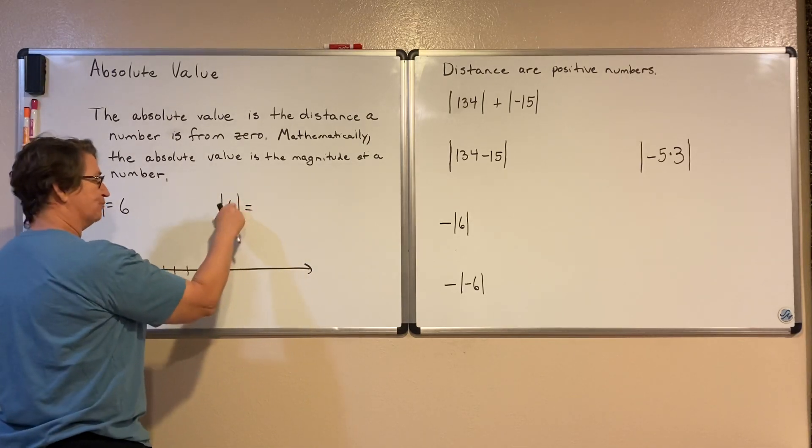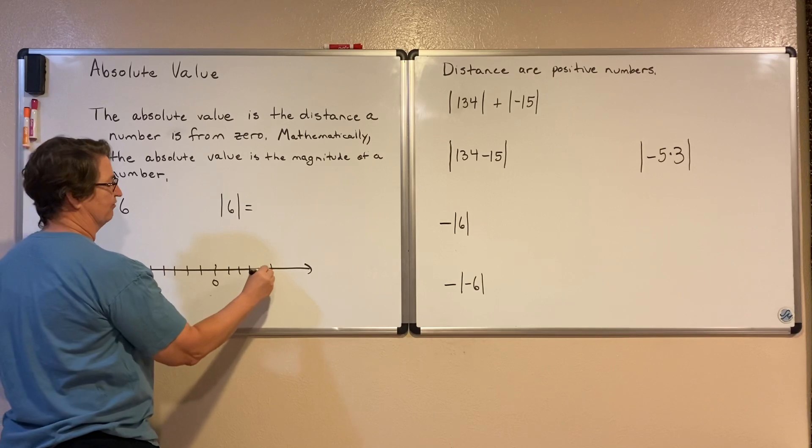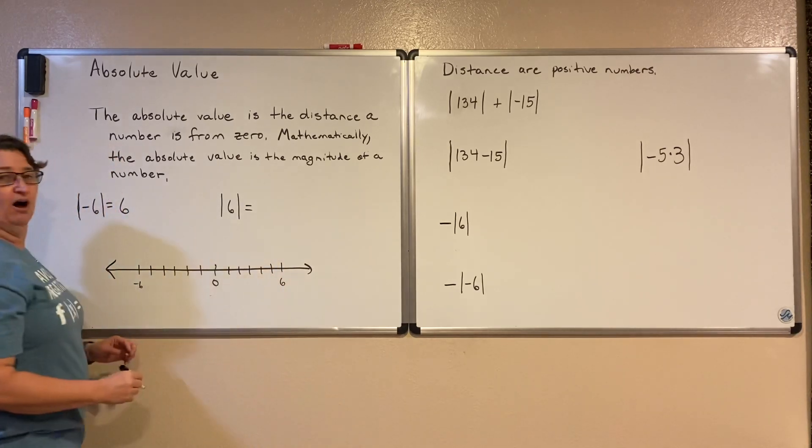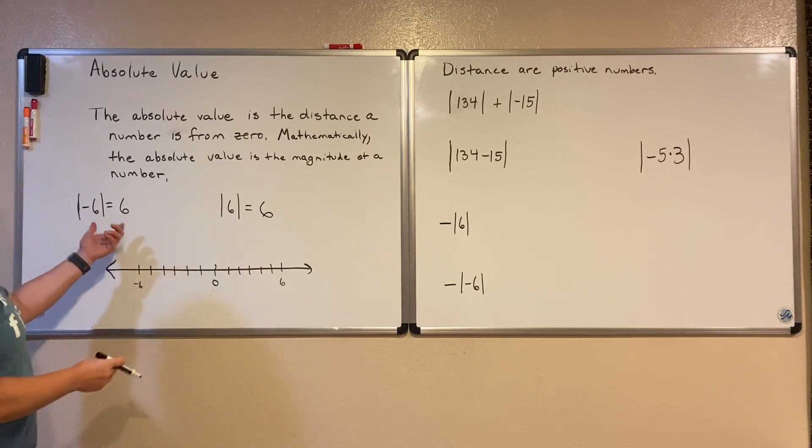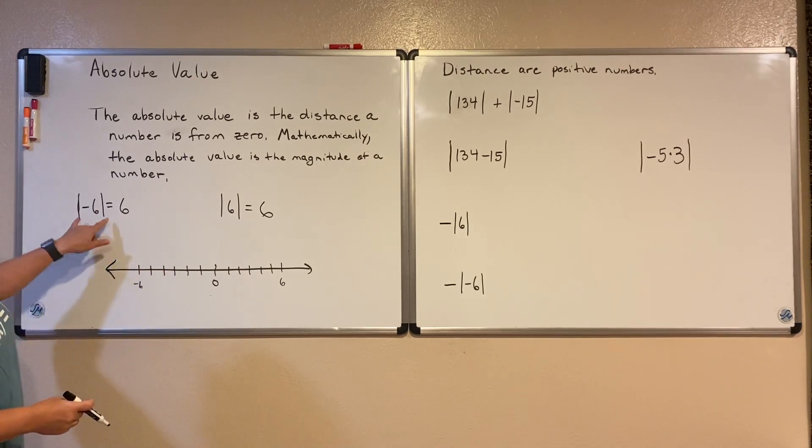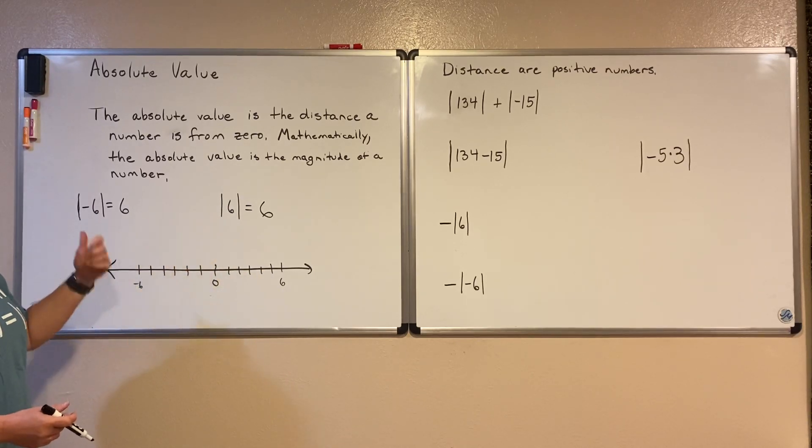What about the absolute value of six? Well that's one, two, three, four, five, six spots also from zero. So both of these are six units away from zero. So the absolute value of both of those numbers is equal to six.